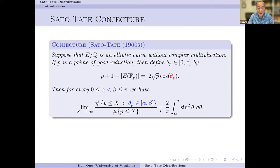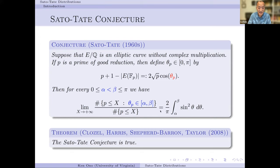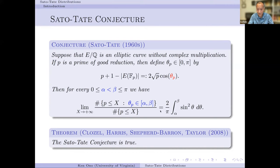That's exactly what Sato and Tate did in the 1960s. They formulated a beautiful conjecture: suppose E is an elliptic curve without complex multiplication defined over the rationals, and define an angle theta_p between 0 and pi. The proportion of primes up to x where the angle lies in an interval [alpha, beta] converges, as x goes to infinity, to the definite integral corresponding to the squashed upper half semicircle.